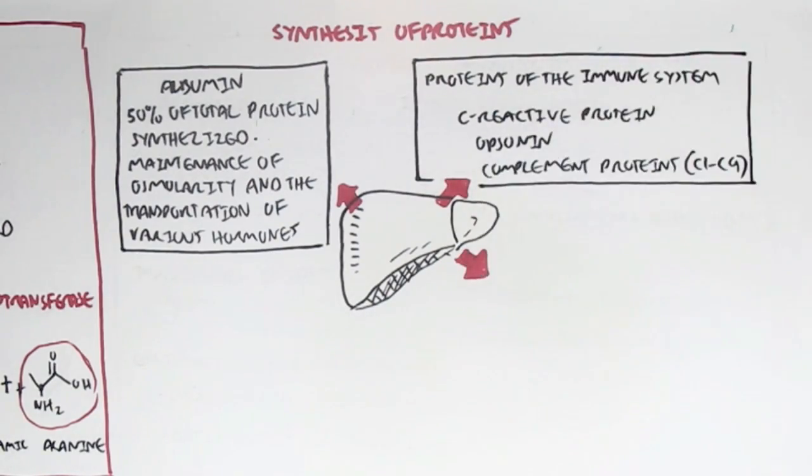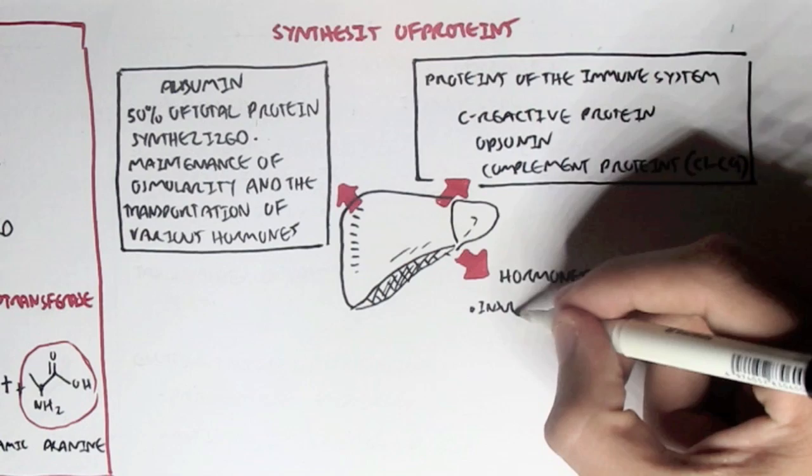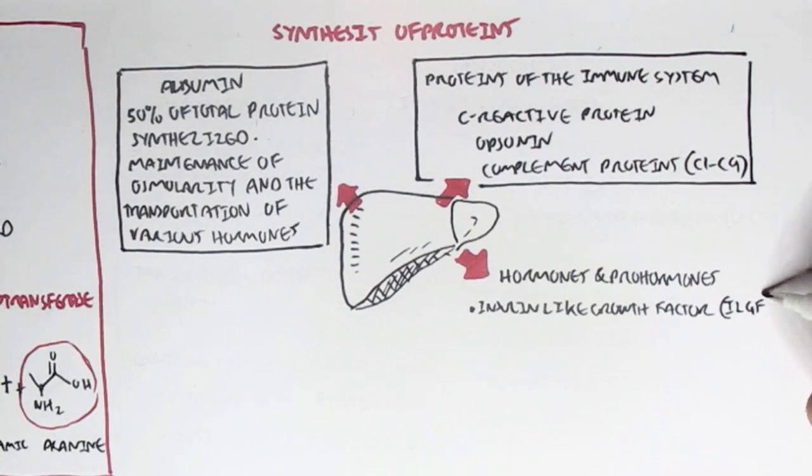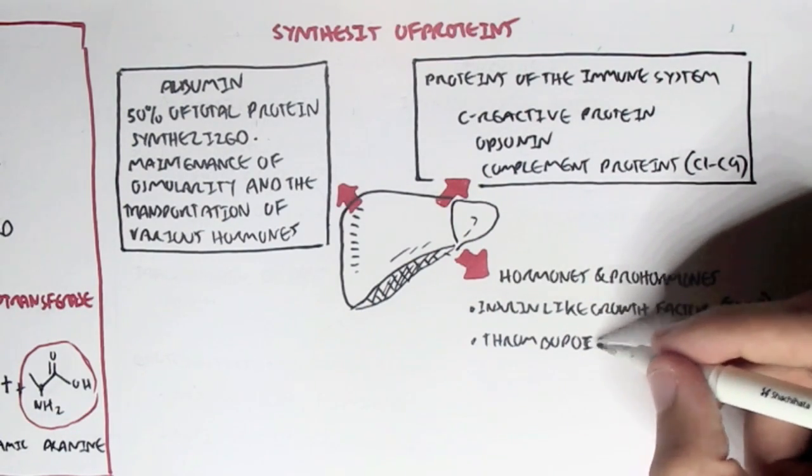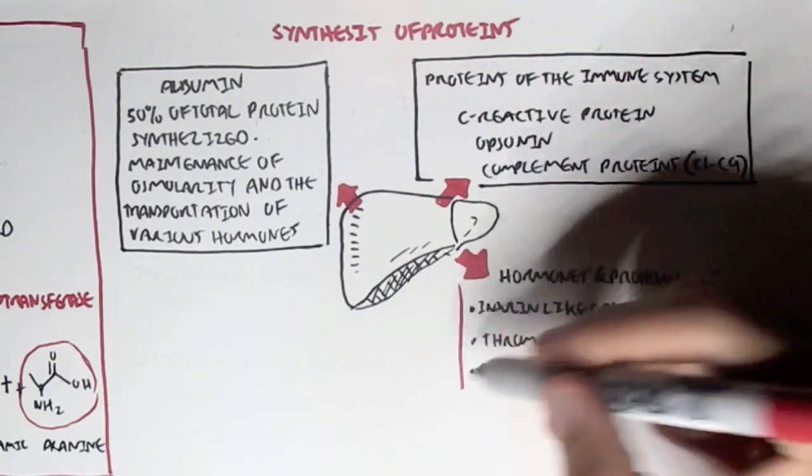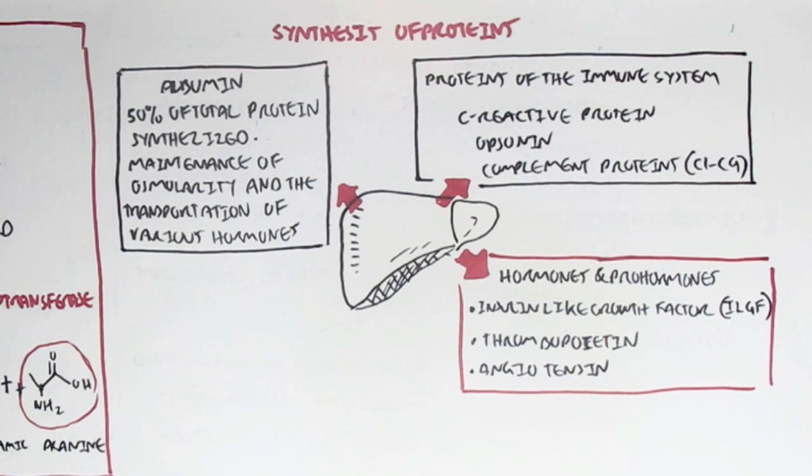The liver also synthesizes various hormones and prohormones, such as insulin-like growth factor, IGF. IGF is important for growth and also has anabolic effects. The liver also produces thrombopoietin, which is important in platelet production. Platelet is important for hemostasis, for fixing up blood vessels. The liver also produces another hormone known as angiotensinogen. Angiotensinogen is part of a big system known as the renin-angiotensin-aldosterone system. This system helps regulate blood pressure.